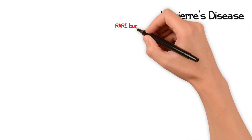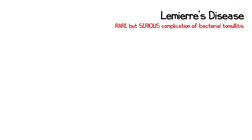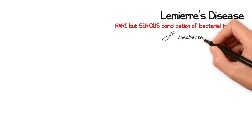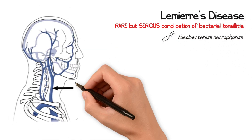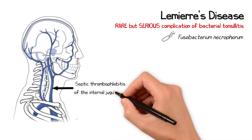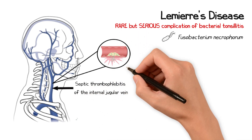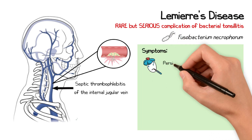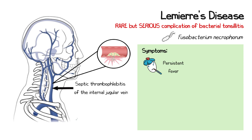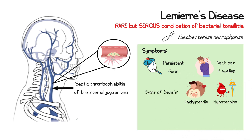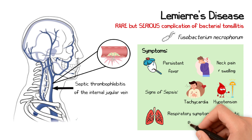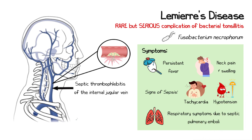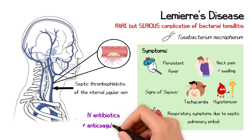Lemierre's disease is a rare but serious complication of bacterial tonsillitis, typically caused by Fusobacterium necrophorum. It is a form of septic thrombophlebitis of the internal jugular vein, leading to septic deposits being spread throughout the body, often affecting the lungs. It clinically presents with persistent fever despite treatment, neck pain and swelling along the course of the internal jugular vein, signs of sepsis including tachycardia and hypotension, and respiratory symptoms due to septic pulmonary emboli. Once diagnosed, treatment includes intravenous antibiotics along with anticoagulation.